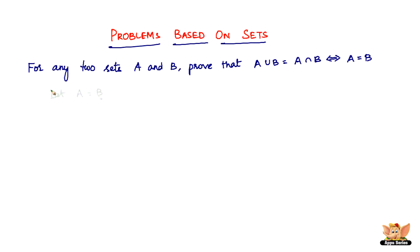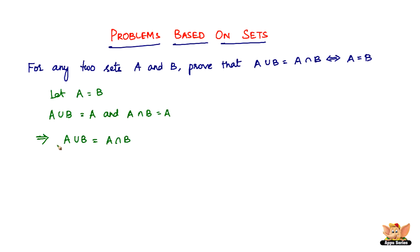First, let us take: let the set A be equal to B. Then we have A union B equal to A, and A intersection B equal to A, which implies that A union B equals A intersection B. Thus, A equal to B implies that A union B equals A intersection B.